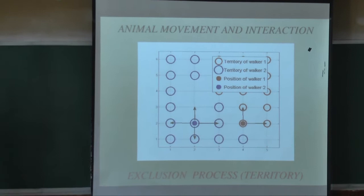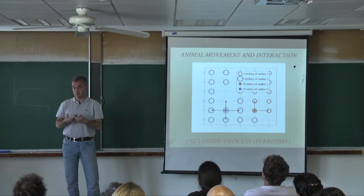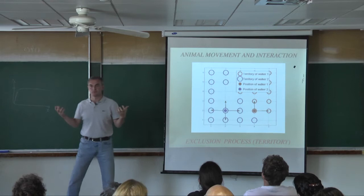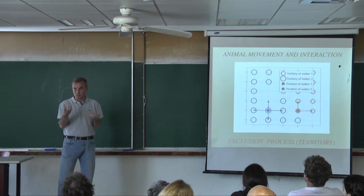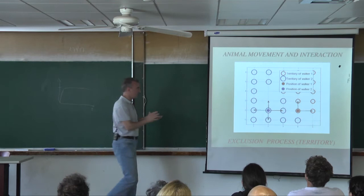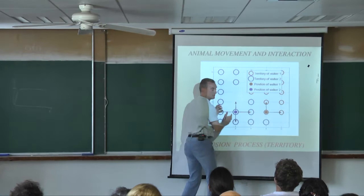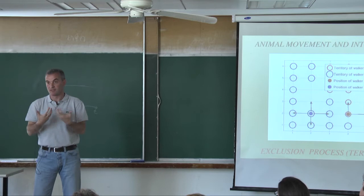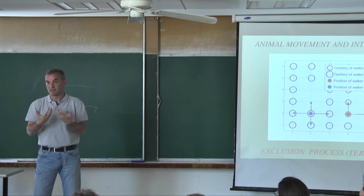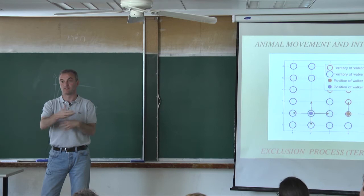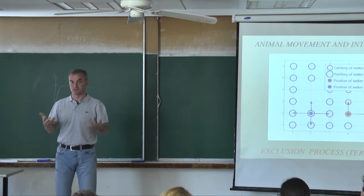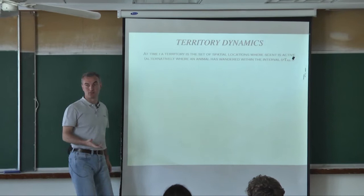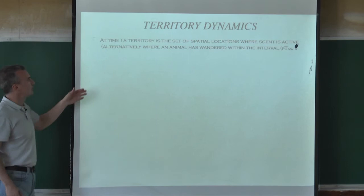It's an exclusion process at the level of territory, but complicated by the fact that the shape of the territories — which are the particles — is not fixed and keeps changing over time, arising from the microscopic evolution of the individuals. It's a very collective process. The territory must be defined: given a time t, a territory is all the set of spatial locations where the scent is active for a given animal — all locations where the animal has wandered in the time interval from t minus TAS to t.